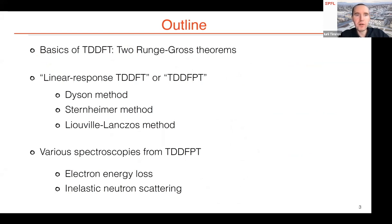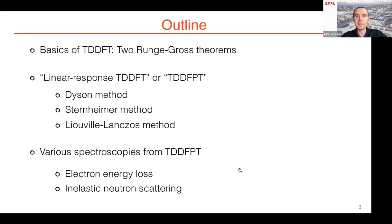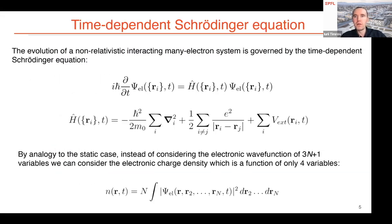The outline: first, the basics of TDDFT — the two Runge-Gross theorems; then practical methods to solve TDDFT equations (Dyson, Sternheimer, and Liouville-Lanczos); finally, two spectroscopies: electron energy loss and inelastic neutron scattering. The time-dependent Schrödinger equation now includes time as a variable. The Hamiltonian has kinetic, electron-electron interaction, and an external potential that depends on both spatial coordinates and time.